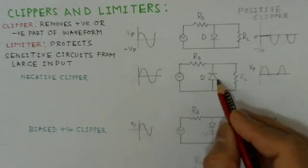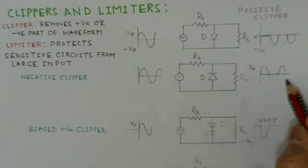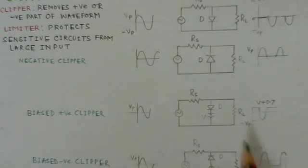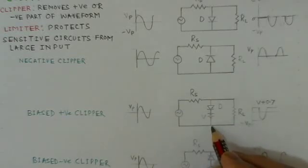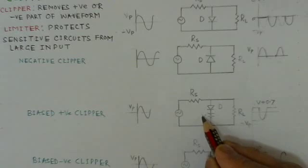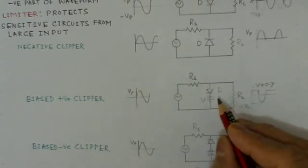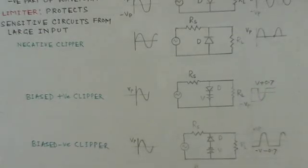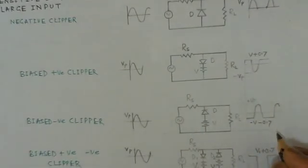A negative clipper is similar, with only the polarity of the diode reversed, so that the negative part of the waveform is clipped off. If clipping is to be done at a specific level, a battery is placed in series with the diode so that it clips at a desired level. For a positive clipper with a battery V, it clips at V plus 0.7V, where 0.7V is the cut-in voltage of the diode. Similarly, there is a biased negative clipper circuit that clips the negative side at a desired level.